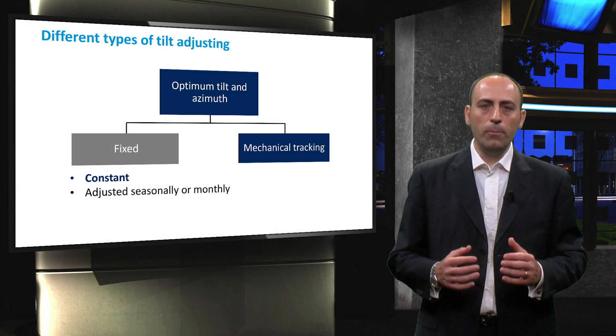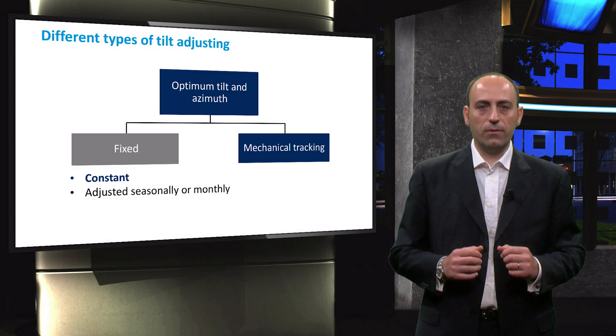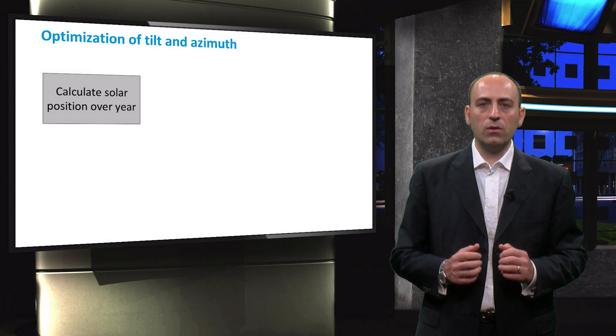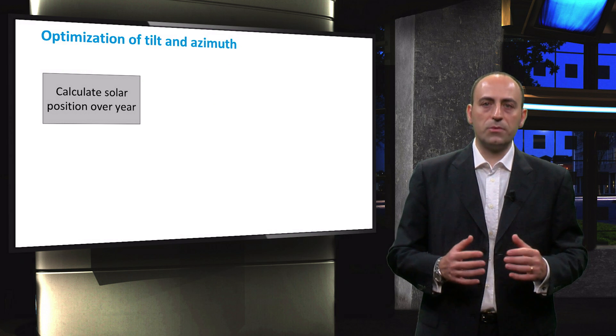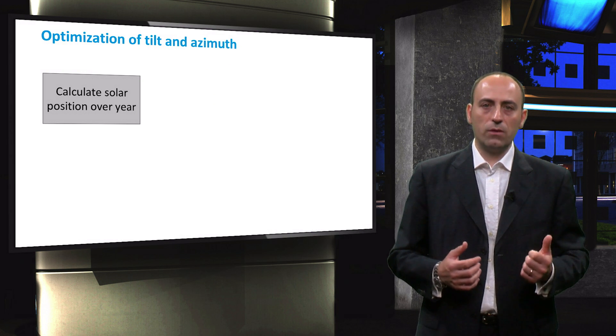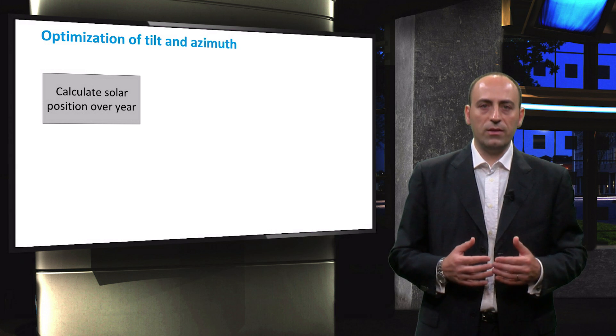Let's start to calculate the optimum tilt angle for a panel with a fixed position over the entire year. The best combination of module tilt and azimuth angle is found using all the concepts we have discussed until now. The idea is to calculate the position of the sun for whatever time step you decide to acquire an accurate tilt prediction.